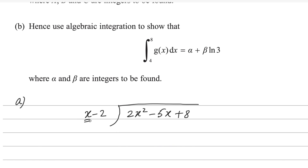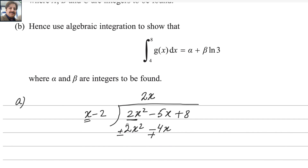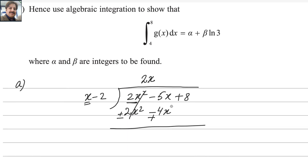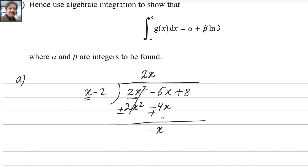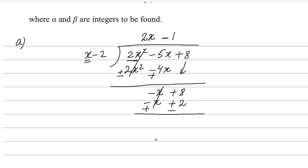We multiply x by such a number to get the first term — that number is 2x. 2x multiplied by x gives 2x squared, and 2x multiplied by negative 2 gives negative 4x. By the rule of division we change the signs — do not forget to change the signs. This cancels out. Negative 5x plus 4x gives minus x, then drop the 8 down. We multiply x by such a number to get negative x — that number is minus 1. Minus 1 times x gives minus x, and minus 1 times negative 2 gives plus 2. Change the signs, this cancels out, and 8 minus 2 is 6.